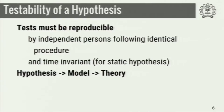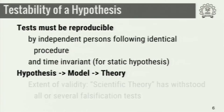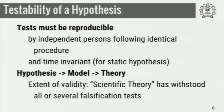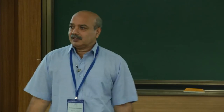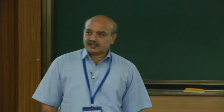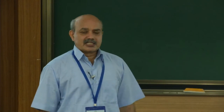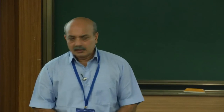What happens over the years is that hypotheses are collected into models, and these models grow into a theory. The extent of validity of a scientific theory is actually decided by the falsification test by the number of people in a number of different contexts it has withstood. We call something an accepted theory when the hypothesis and models given by a particular scientific theory have withstood falsification tests by many people in many different contexts.